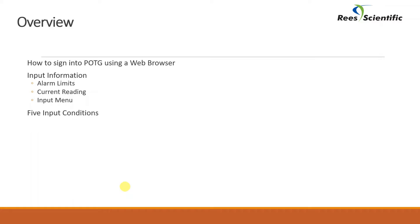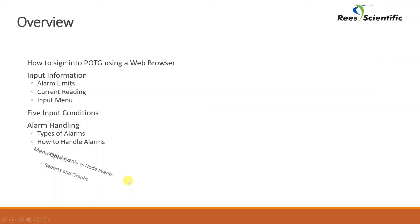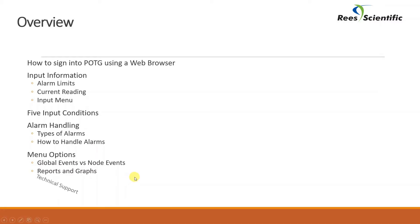Next we will learn about the five different input conditions and what they mean, followed by alarm handling showing the different types of alarm conditions and how to handle the alarms. Next I will explain the main menu options and how you can produce system reports, and finally I will explain how you can get assistance from our ReS Scientific Technical Support Division.